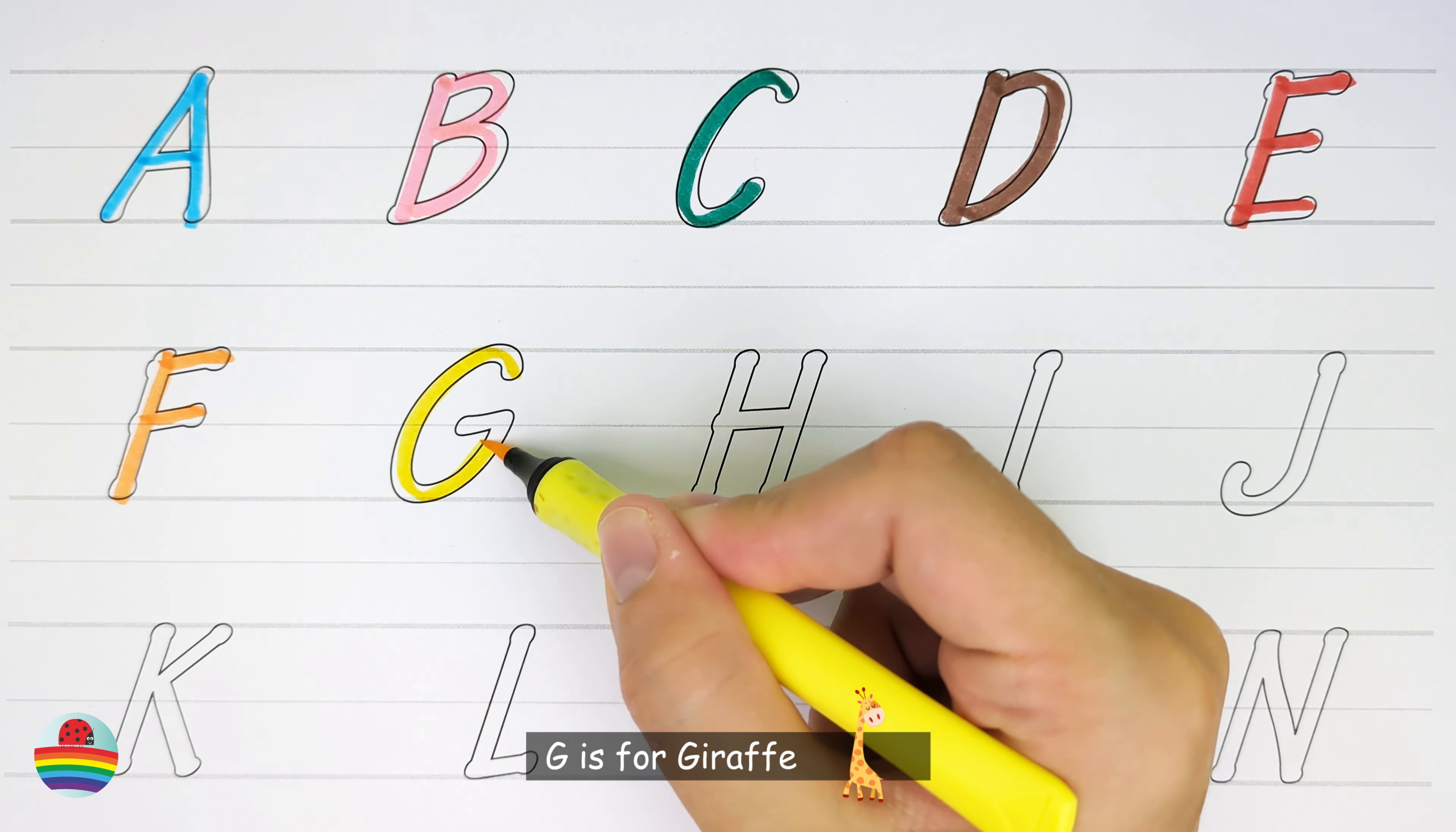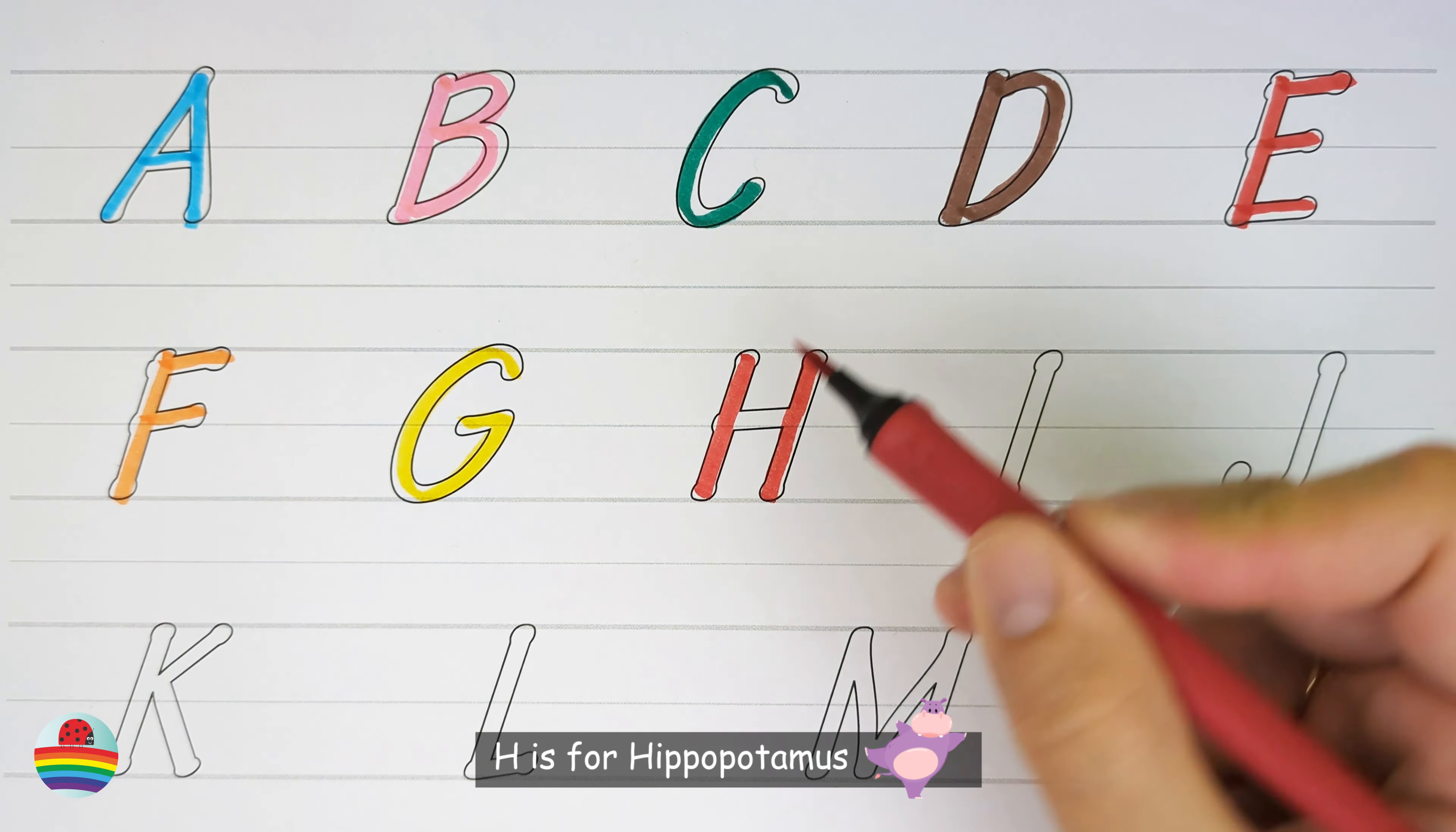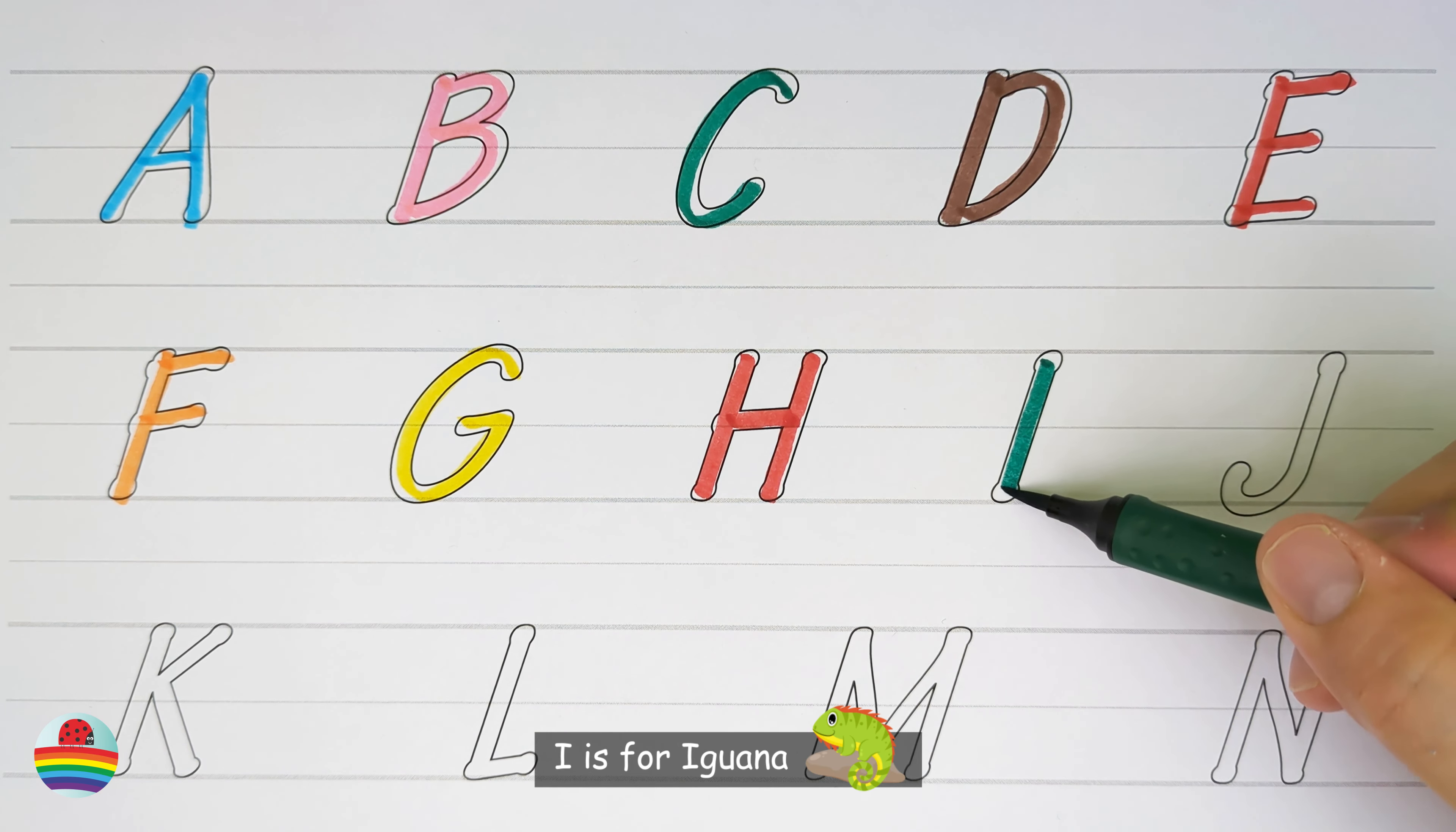G. G is for Giraffe. H. H is for Hippopotamus. I. I is for Iguana.